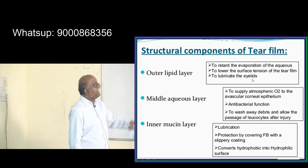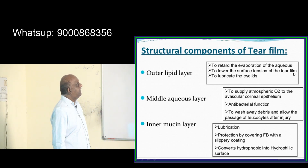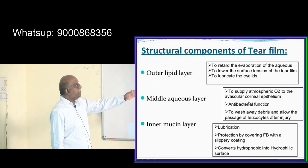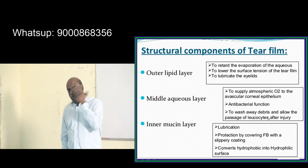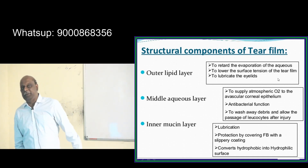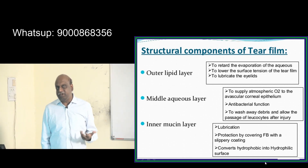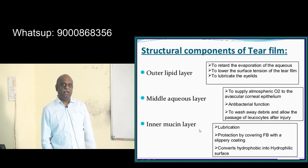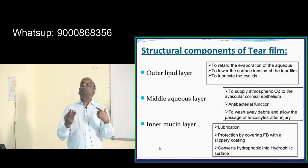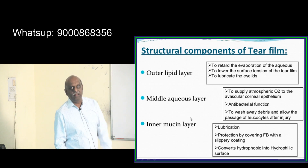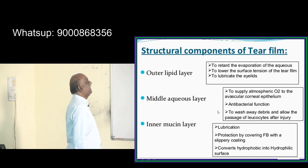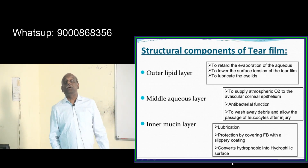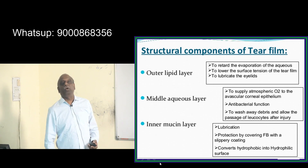The outer lipid lubricates the eyelids and lowers the surface tension of the tear film. The aqueous layer supplies atmospheric oxygen to the avascular corneal epithelium — your corneal epithelium doesn't have blood supply to provide oxygen, but the middle aqueous layer enables oxygen absorption from the atmosphere into the avascular corneal epithelium.